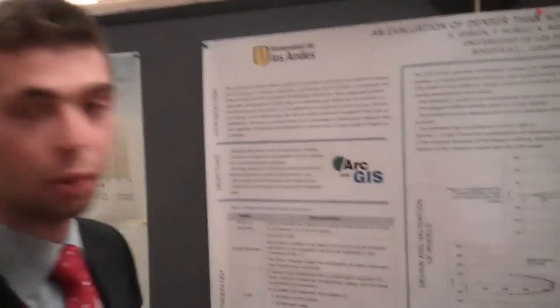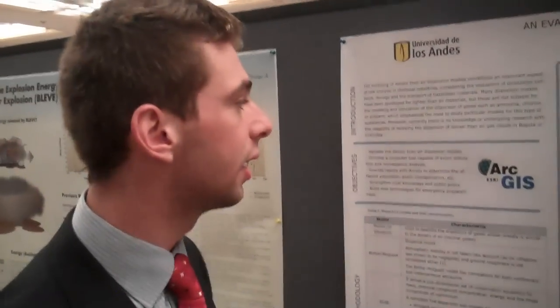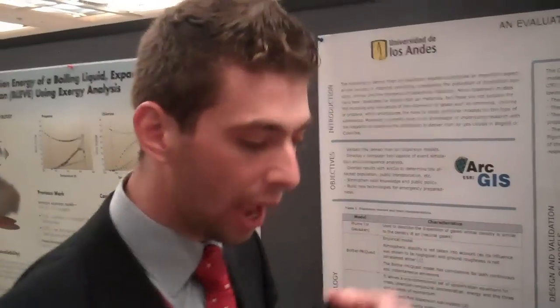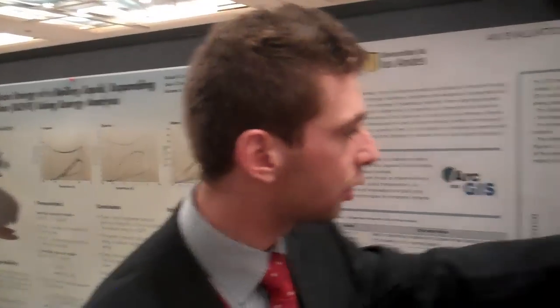We picked the worst-case scenario: a very stable stability class, a very low wind speed, and an emission duration of 10 minutes. After doing the respective simulations, we constructed the isoconcentration contours for 17,000 ppm, which is the AEGL-2 value — the concentration at which people are going to start having irreversible secondary effects from propane exposure.